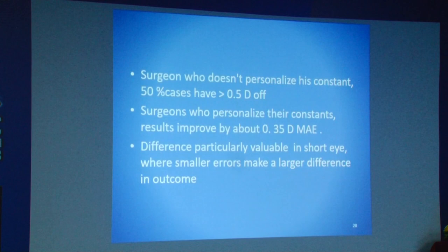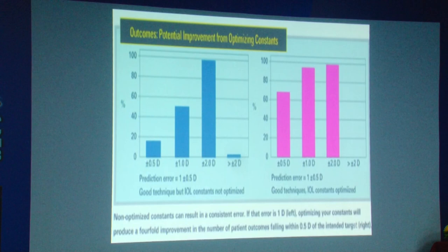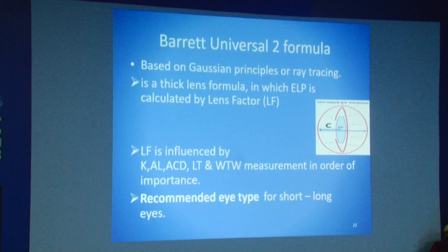Surgeons who do not personalize their constants: 50% of their cases have error more than 0.5 diopters. As shown on the left-hand slide, if you don't optimize your constants, only 18% fall within 0.5 diopters — this jumps to about 70% when constants are optimized. Within one diopter, it changes from 50% to 95%. That's a huge difference in your results.